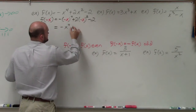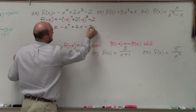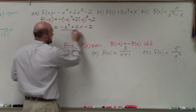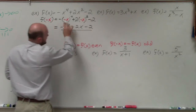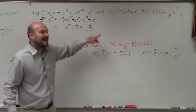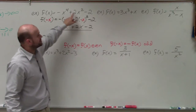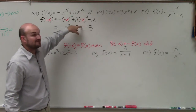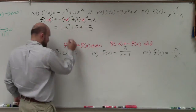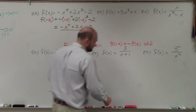Positive x to the fourth times the coefficient gives us positive x to the fourth. This becomes positive, so it's plus 2x squared minus 2. By plugging in negative x, I return the exact same function that I originally have. So this is even.